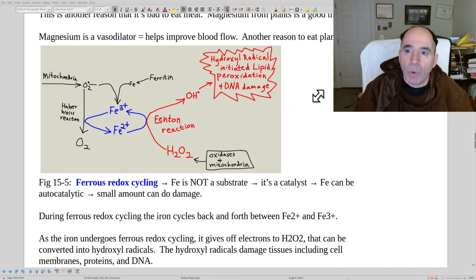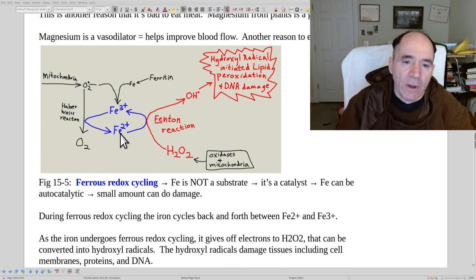Basically, when you have free iron, it starts to cycle back and forth between Fe2+ and Fe3+. This is called ferrous redox cycling. It's not really so much a substrate for a reaction, it's like a catalyst. It can become autocatalytic, meaning it can really speed up these reactions and keep on going back and forth and generating a lot of these free radicals. This is called the Fenton reaction.